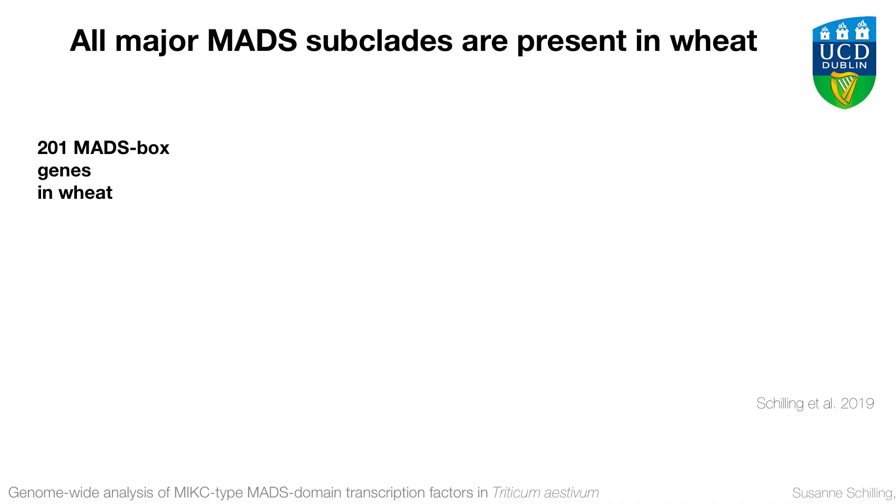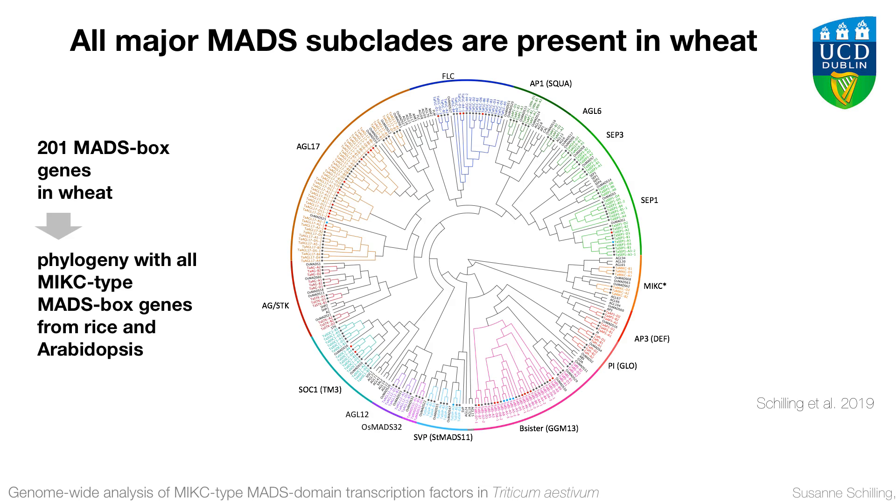Still, we wanted to take a look at MADS-box genes in wheat. From Arabidopsis and from rice, we knew that there are about 45 genes that we wanted to look at. So if we consider a 3-to-1 ratio, we would expect about 140 genes. What we found was actually 201 genes.